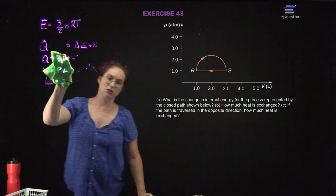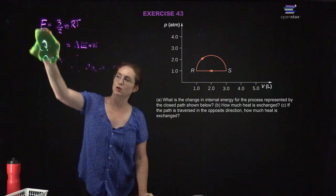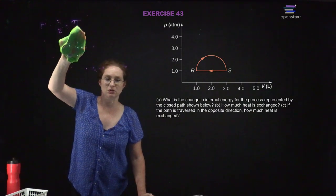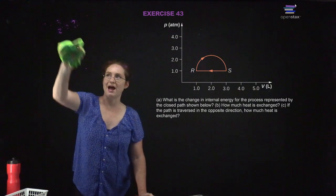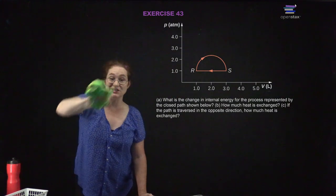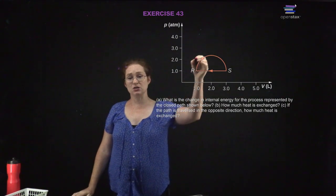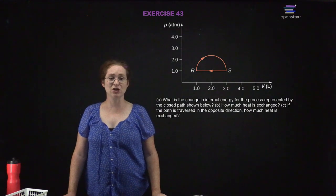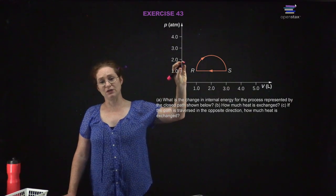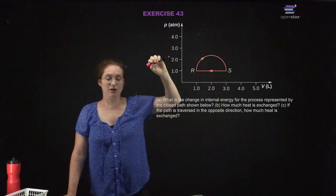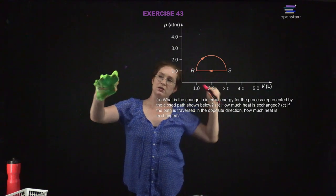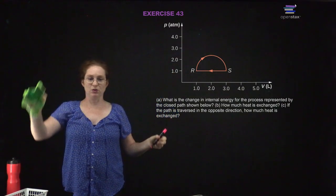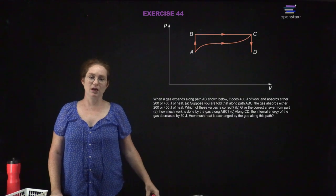What is the change in internal energy for a closed path process? For a closed path — one complete cycle — there is no change in internal energy, because you go back to the same spot. So the heat equals the work for the cycle.